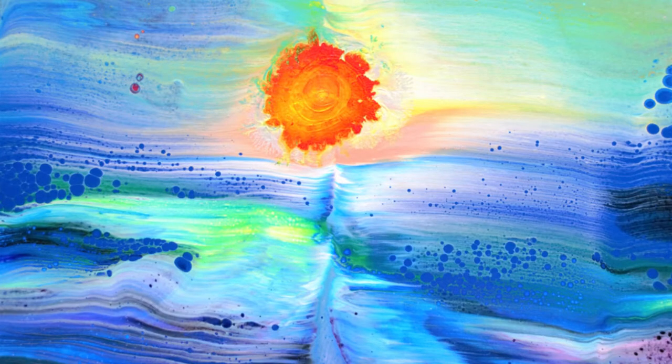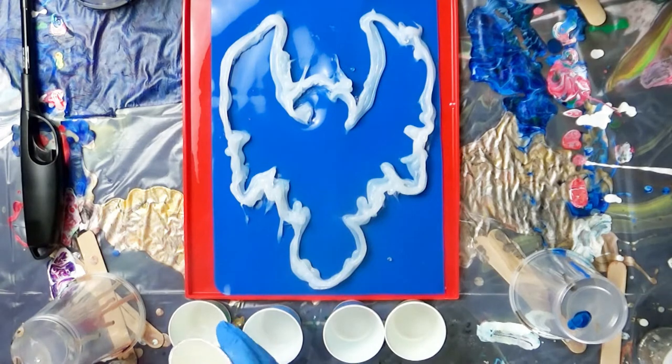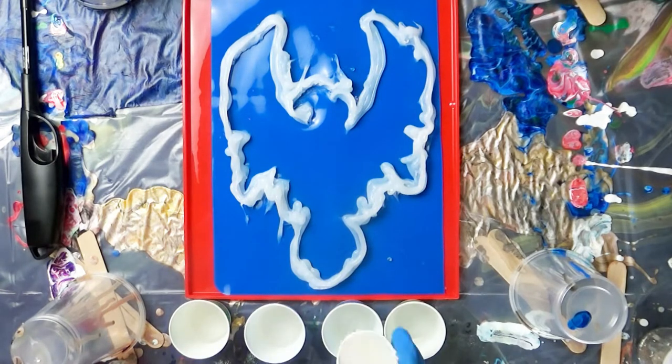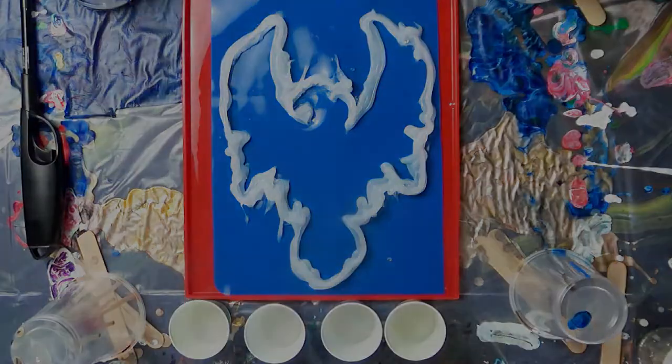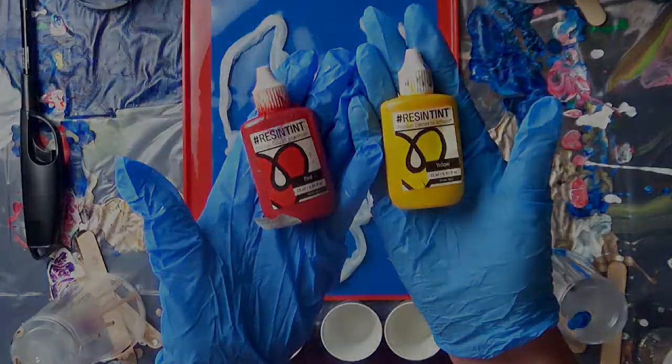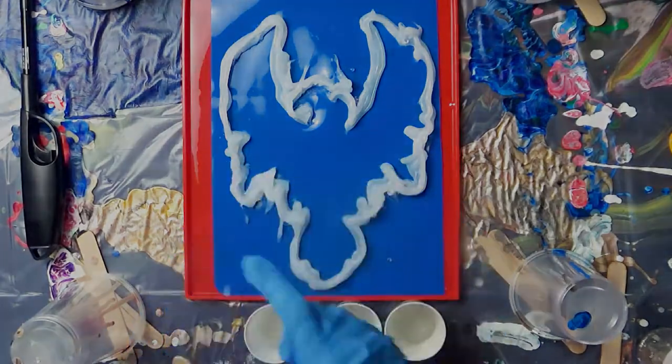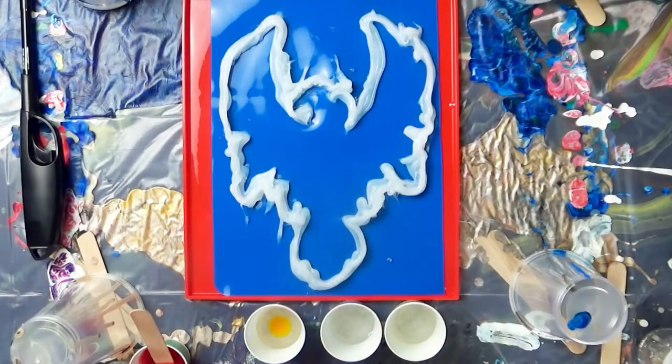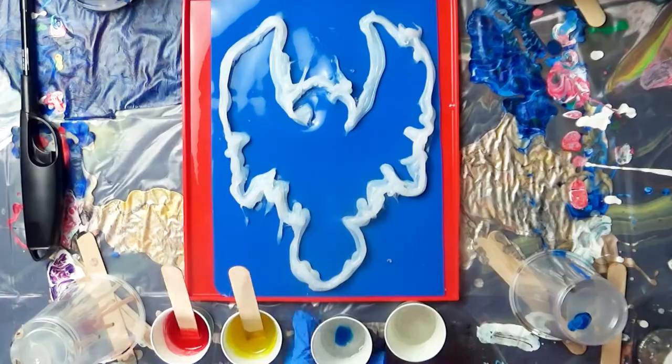I'm using art resin tints in red, yellow, blue, and purple. I'll add a few drops and stir, and add a few more drops until I reach the desired tint. I love using tints because they're transparent and the final piece will end up looking like glass.